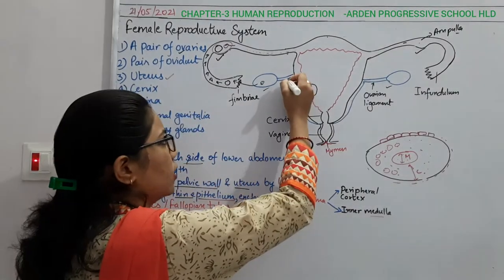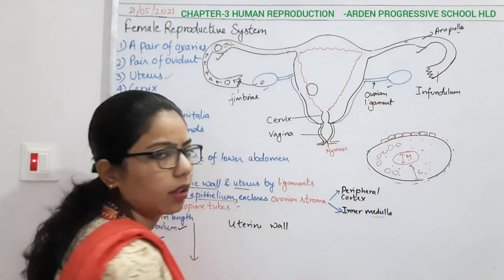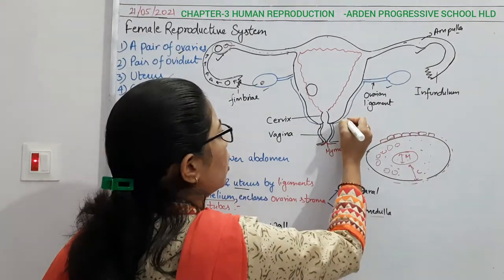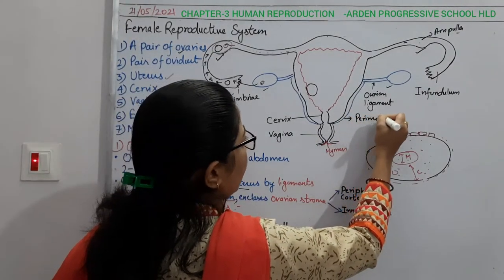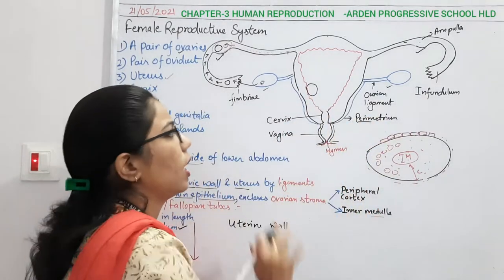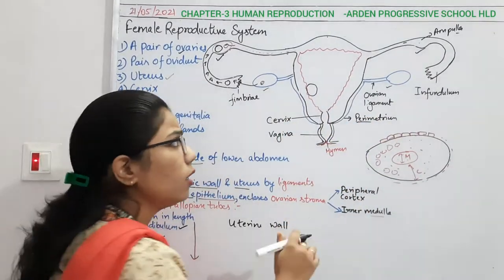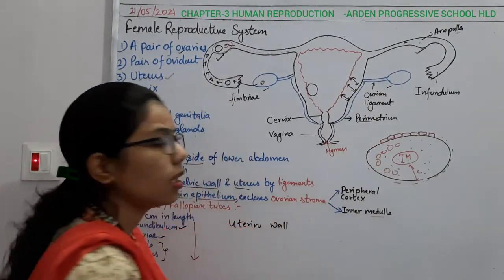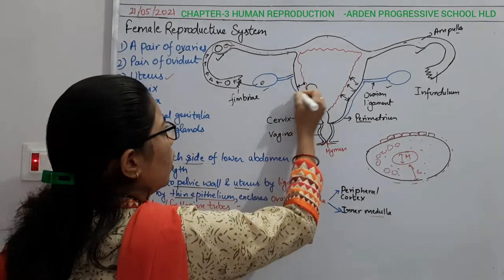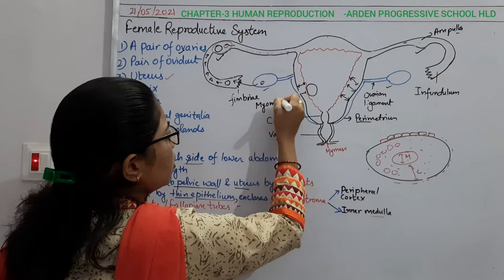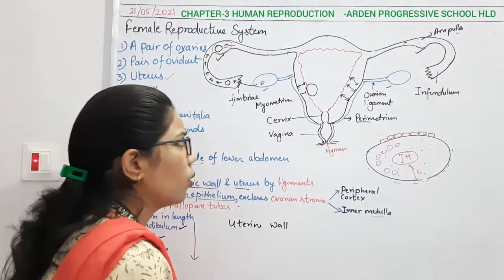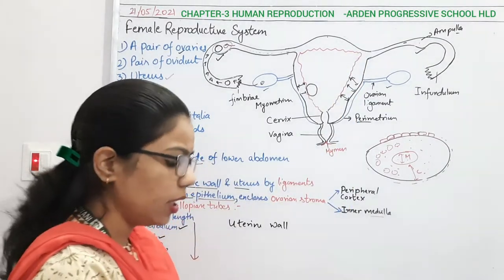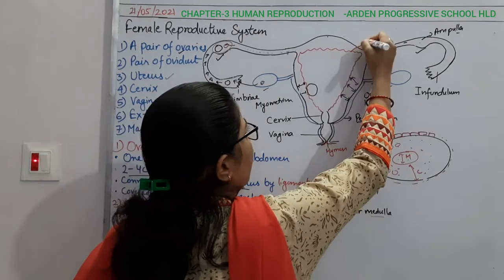The outermost layer, situated at the peripheral region towards the outer part, is called the perimetrium — 'peri' meaning peripheral. Inner to it is the part known as the myometrium. And the innermost layer, which I have drawn with the red marker, is known as the endometrium.